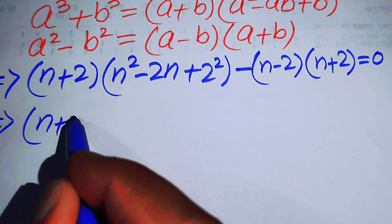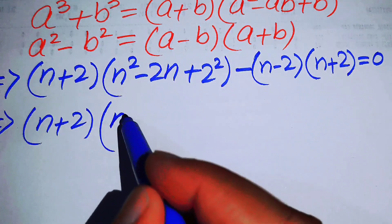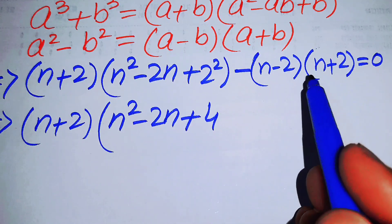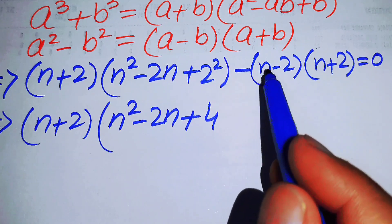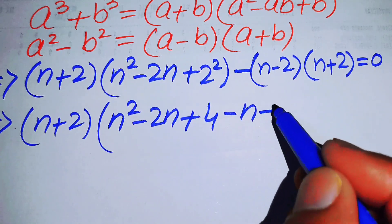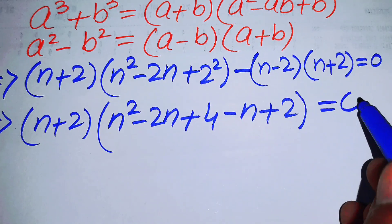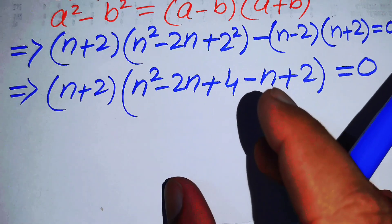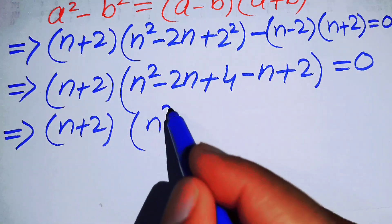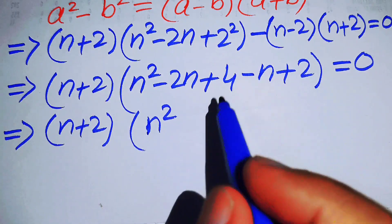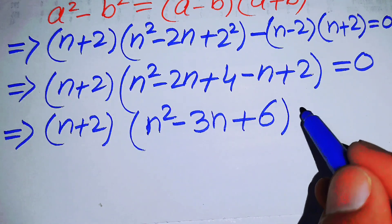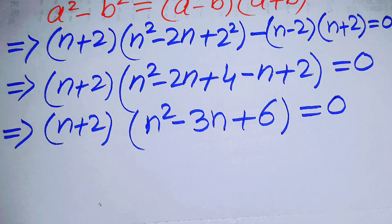We take out the common factor (n + 2), giving (n + 2) times [n² - 2n + 4 - (n - 2)] equals 0. Distributing the minus sign and simplifying: -2n - n = -3n and 4 + 2 = 6, so we get (n + 2)(n² - 3n + 6) = 0.